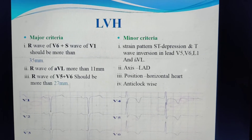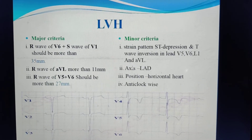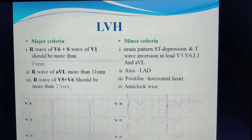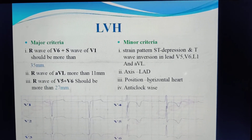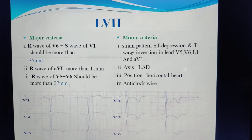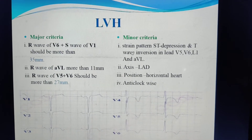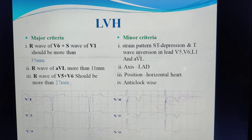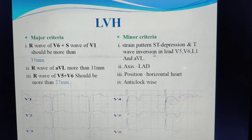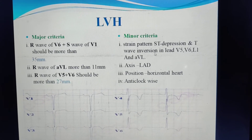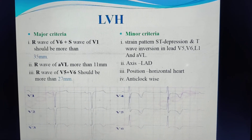Minor criteria for left ventricle hypertrophy: left axis deviation, horizontal position, anticlockwise rotation, and the strain pattern — ST depression and T wave inversion in leads V5, V6, L1, and AVL.